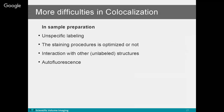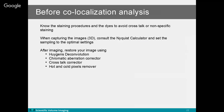We should always pay attention to sample preparation. Consider the following potential issues: non-specific binding and how to minimize it, whether the staining procedure is optimized, and whether labeled structures can interact with other structures. Also be aware of autofluorescence. In summary, before co-localization we need to know our staining procedure and dyes to avoid crosstalk or non-specific binding. When capturing images, consult the Nyquist calculator for optimal settings.